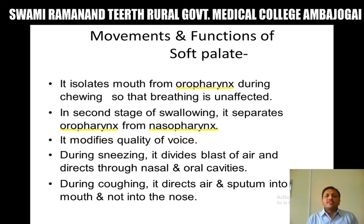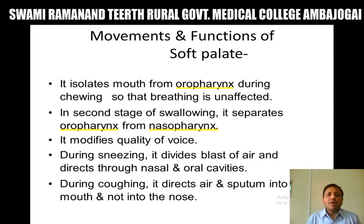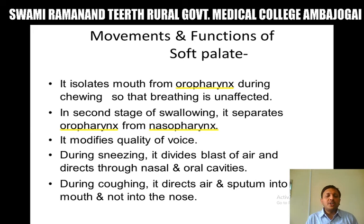Movements and functions of the soft palate: the palate controls two gates and is a crossroad between food and air passages. It controls the pharyngeal isthmus as well as the oropharyngeal isthmus, either closing the gates or regulating their size. It plays an important role in chewing, swallowing, speech, coughing, and sneezing. It isolates the mouth from the oropharynx during chewing so that breathing is unaffected. In the second stage of swallowing, it separates the oropharynx from the nasopharynx. During sneezing it divides the blast of air through the nasal and oral cavities, and during coughing it directs air and sputum into the mouth.